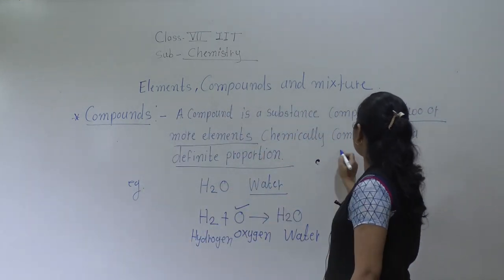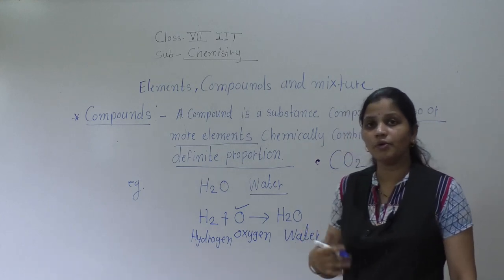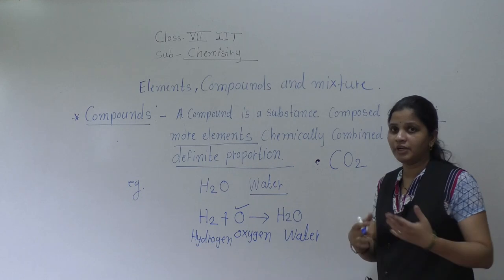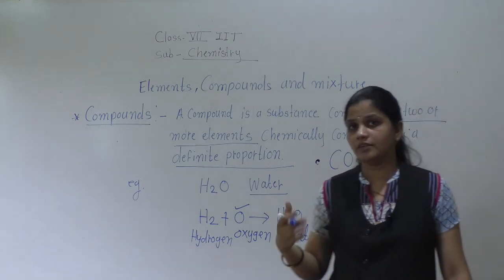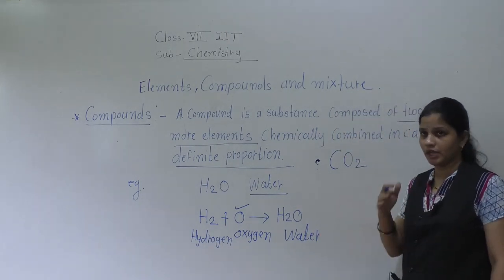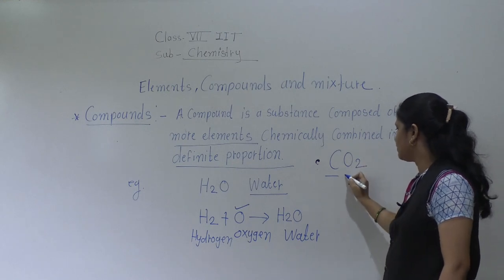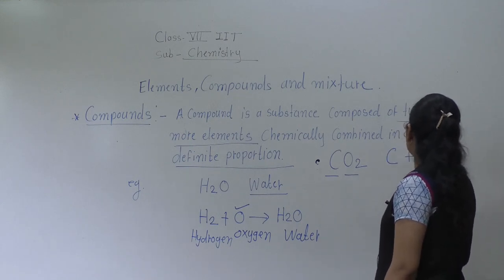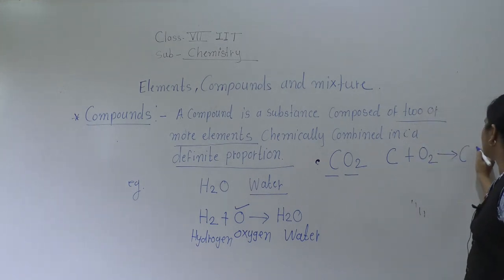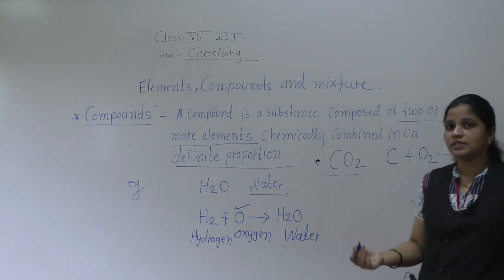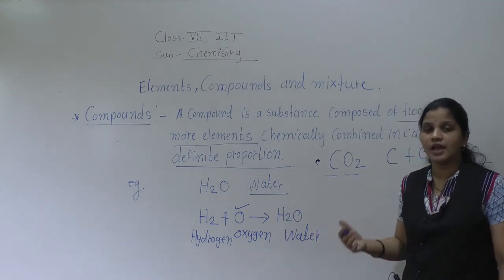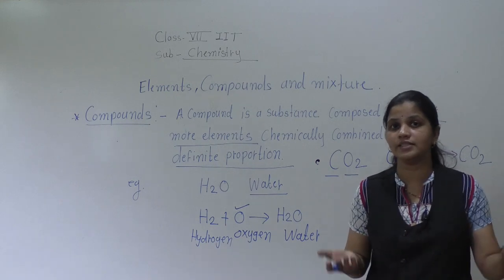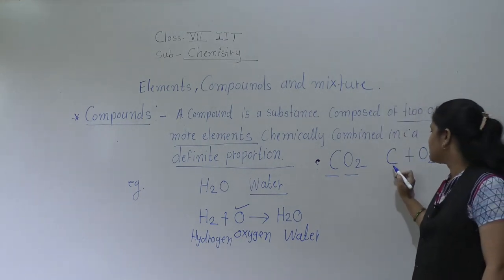One more example: CO2. What is CO2? CO2 means carbon dioxide. Now, which two elements are present in this compound? Think fast — which two elements are present? The first is carbon and the second one is oxygen. So how is this compound formed? Carbon plus oxygen forms CO2, which means carbon dioxide. This is a gas, and when we inhale oxygen, while exhaling, what we breathe out is carbon dioxide. So it is formed from carbon plus oxygen.